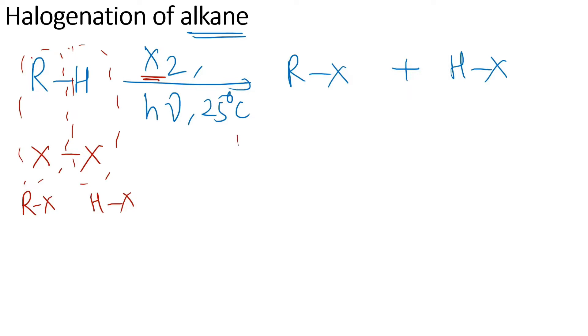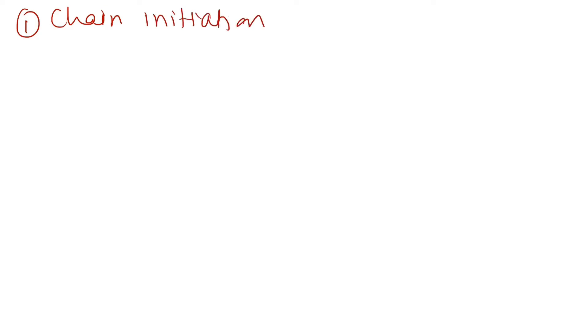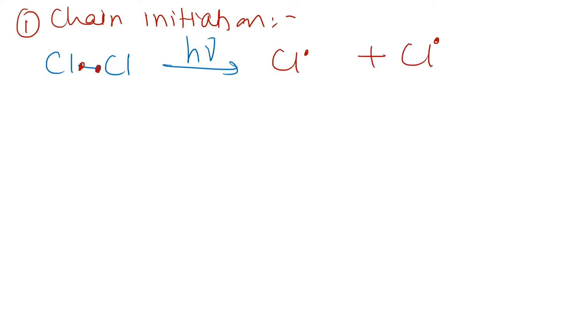The mechanism of this reaction — if you remember from the alkane chapter — involves three steps: chain initiation, propagation, and termination. In chain initiation, for example with Cl₂, sunlight breaks the Cl–Cl bond. Each bond is made up of two electrons, so two chlorine radicals are formed.